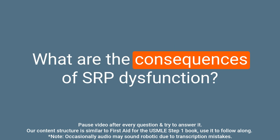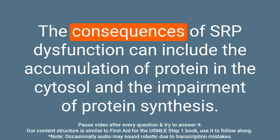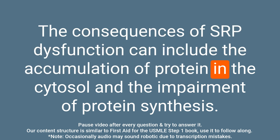Question: What are the consequences of SRP dysfunction? Answer: The consequences of SRP dysfunction can include the accumulation of protein in the cytosol and the impairment of protein synthesis.